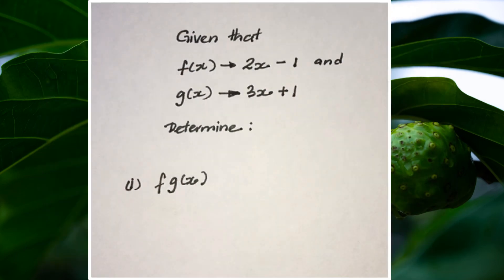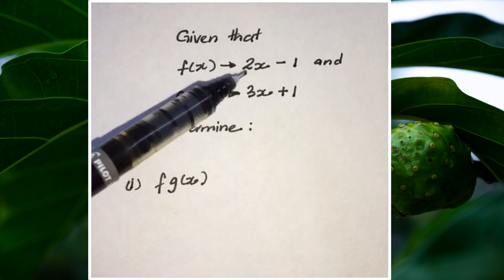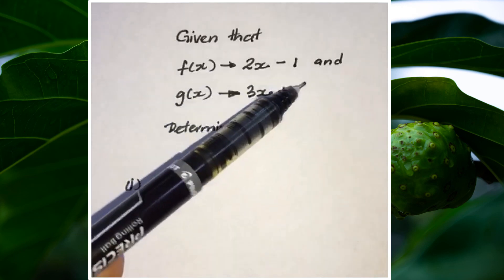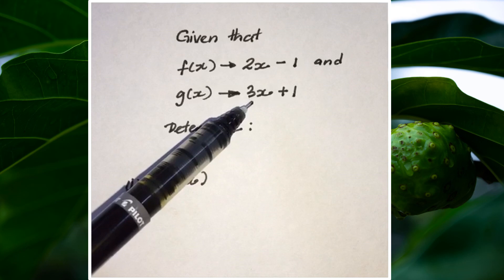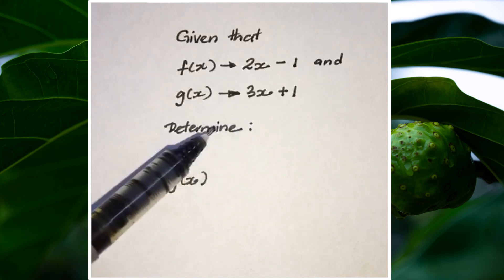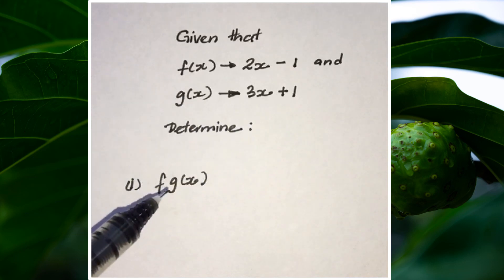Let's look at how this works in mathematics. Given that the function f(x) = 2x - 1 and the function g(x) = 3x + 1, determine f(g(x)). This is how we represent a composite function.